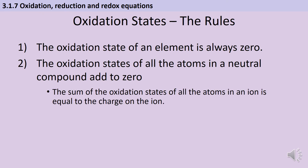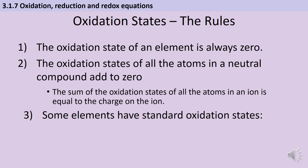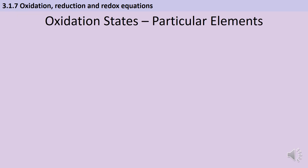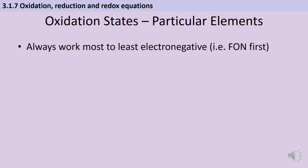If instead of a neutral compound you have a compound ion — like a carbonate ion with a 2− charge — the oxidation states of all the atoms in the ion have to add up to be the charge on the ion. So the carbon plus the three oxygens in that carbonate ion — if we add up all their oxidation states we would get 2−, which is the charge on the carbonate ion. Finally, to allow us to apply rule two, some elements have standard oxidation states. There are six rules to learn, although they are quite straightforward and intuitive.